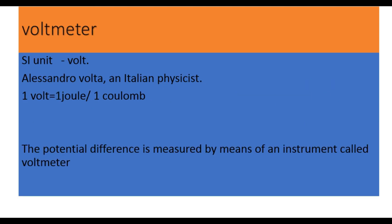The SI unit of potential difference is the volt, named after Alessandro Volta, an Italian physicist. We can define one volt: one volt equals one joule per one coulomb. Joule is the unit of work done and coulomb is the unit of charge. The potential difference is measured by means of an instrument called a voltmeter.